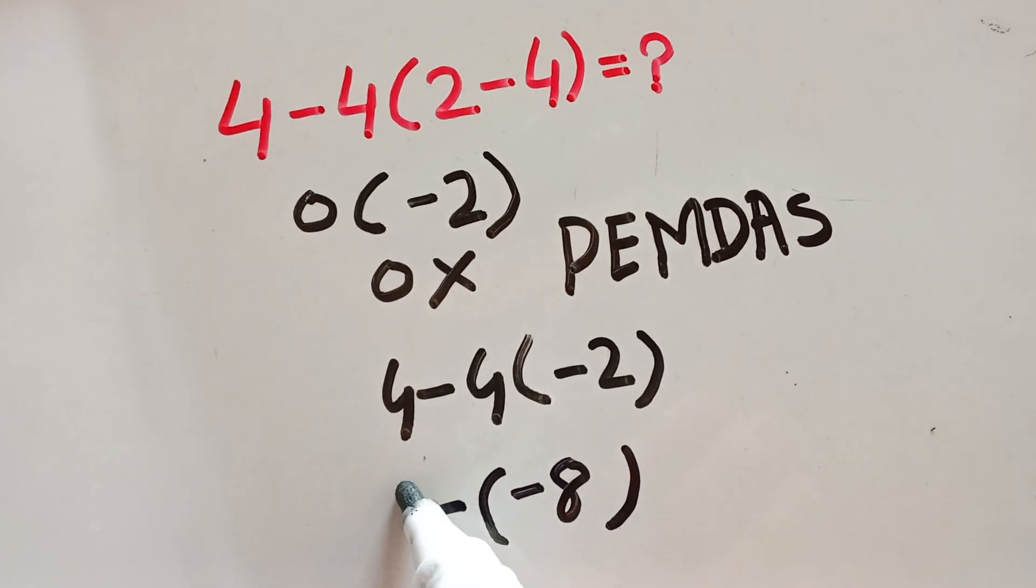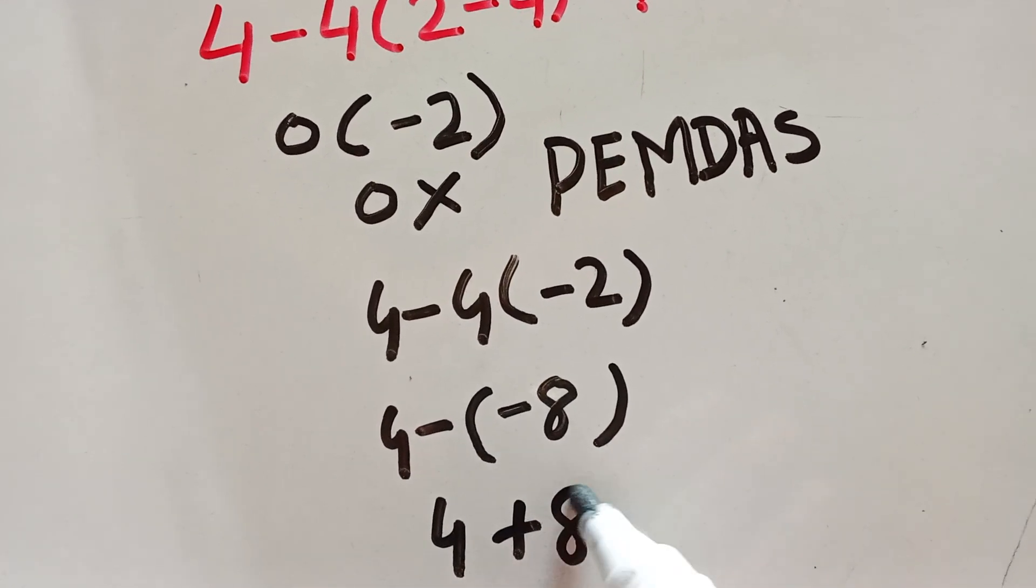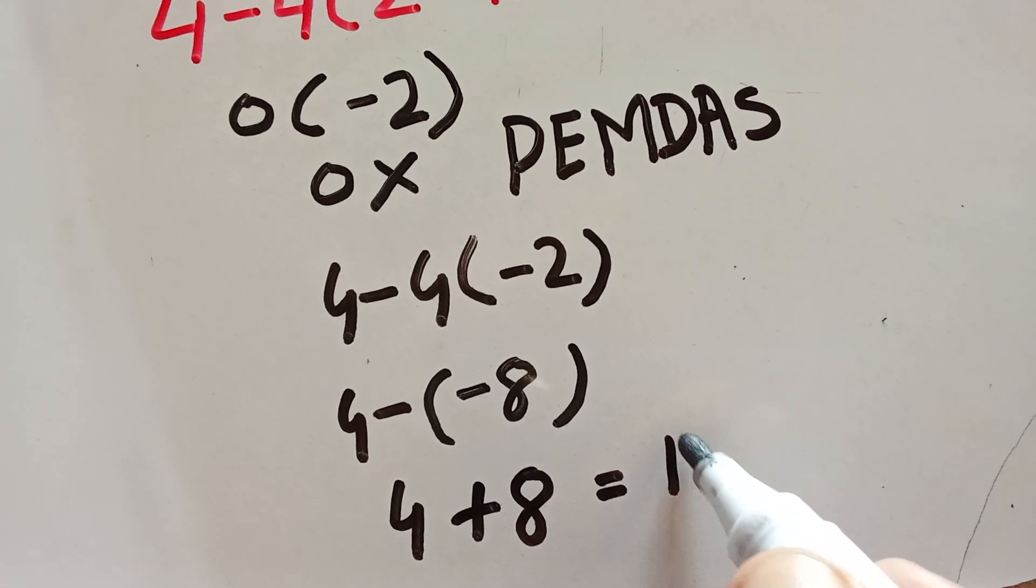4 minus minus 8 equals 4 plus 8. The final answer of this expression is 12.